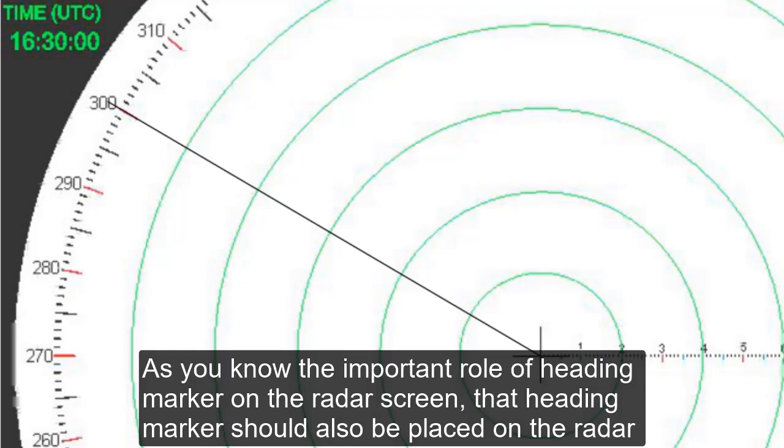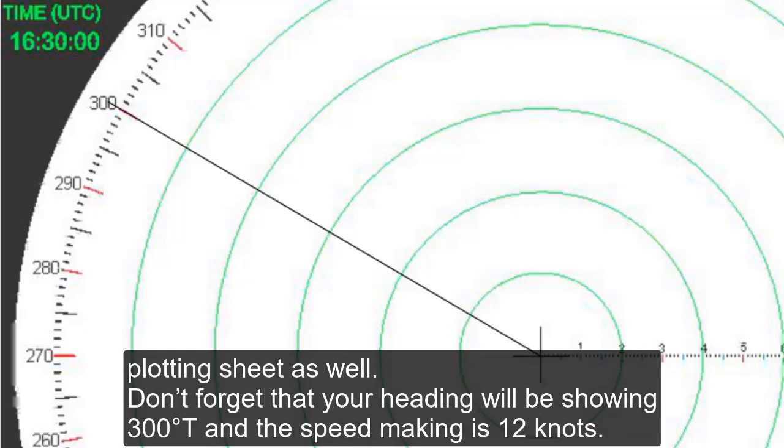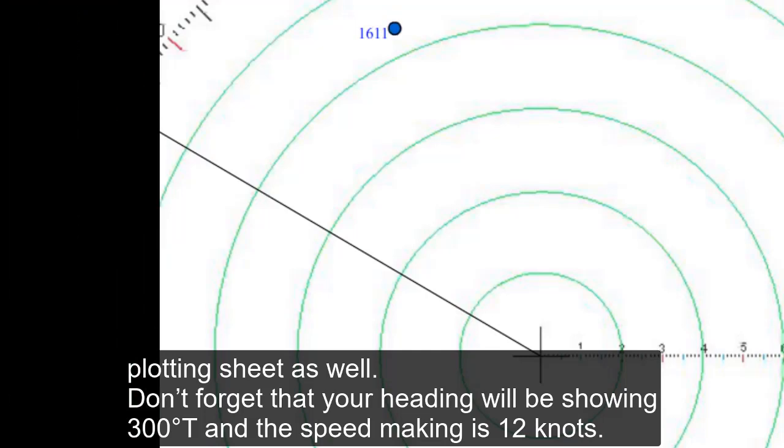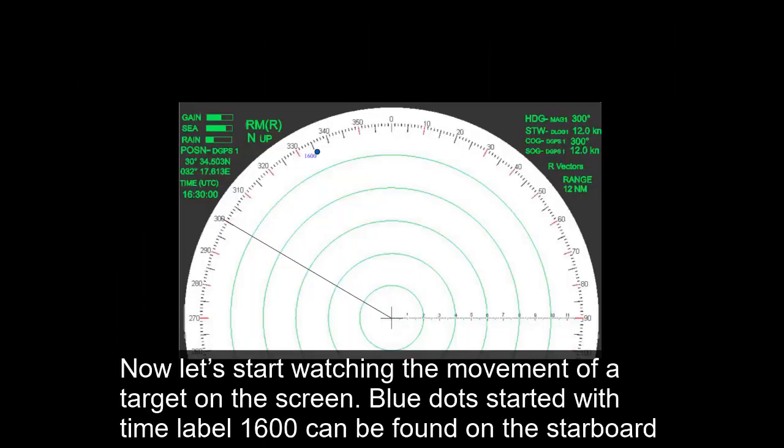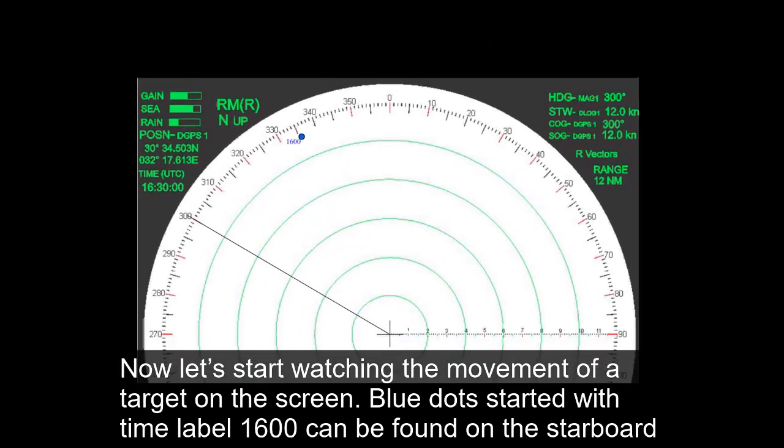As you know, the important role of the heading marker on the radar screen means that heading marker should also be placed on the radar plotting sheet as well. Don't forget that your heading will be constantly showing 300 degrees true and the speed making is 12 knots. Now let's start watching the movement of a target on the screen.